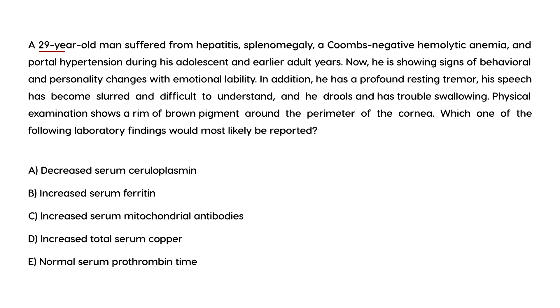A 29-year-old man suffered from hepatitis, splenomegaly, Coombs-negative hemolytic anemia, and portal hypertension during his adolescent and earlier adult years. Now he shows behavioral and personality changes with emotional lability, a profound resting tremor, slurred speech, drooling, and trouble swallowing. Physical exam shows a rim of brown pigment around the perimeter of the cornea. This describes Wilson disease. The copper-carrying protein ceruloplasmin is deficient in its synthesis because there's liver disease, so its levels will be low.